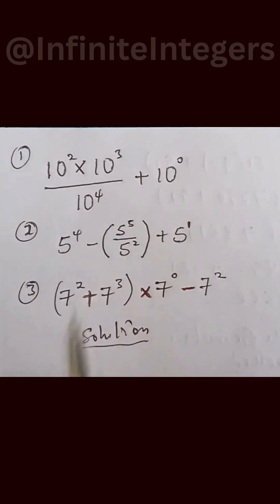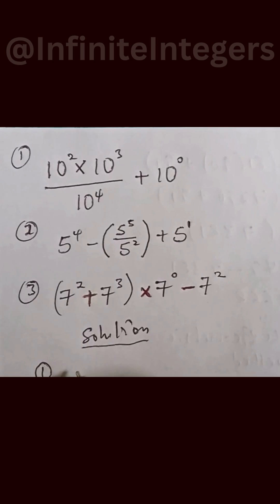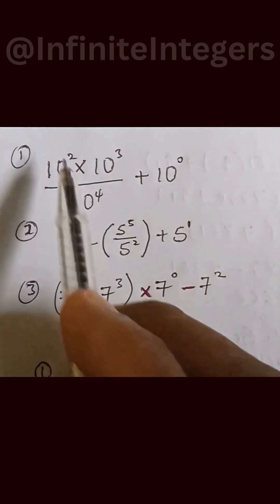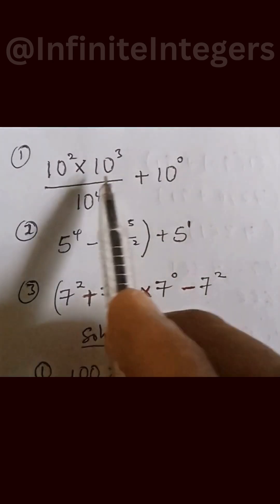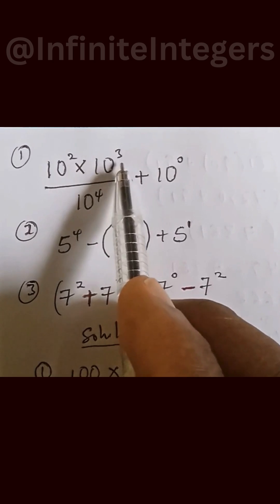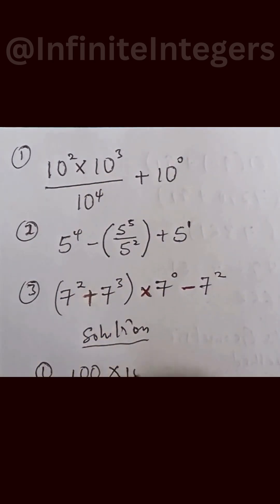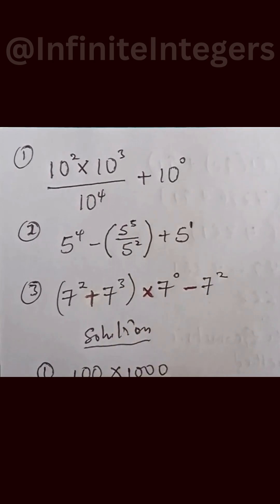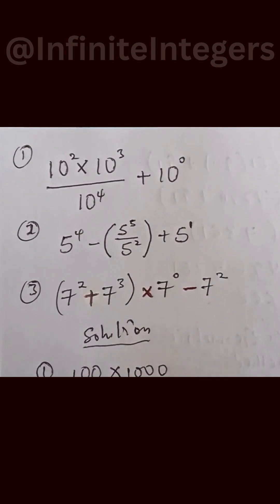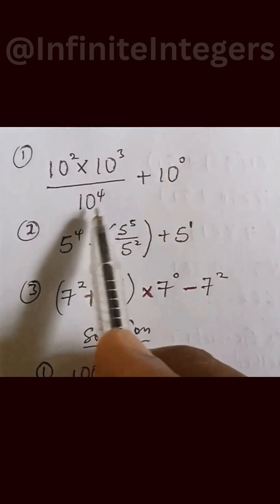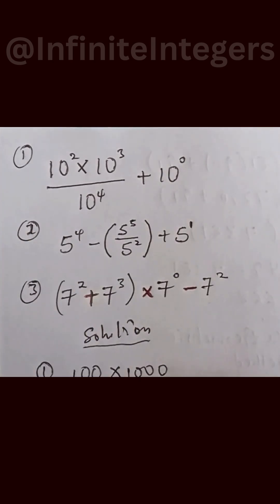So we can express that as the first one is given as 100. This is given as 100 multiplied by 10^3. 10 multiplied by itself three times, we have 1000 over the denominator, also given as 10,000 if we multiply 10 by itself four times, then added.